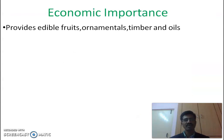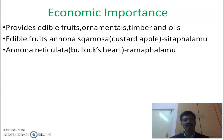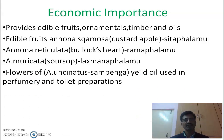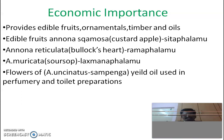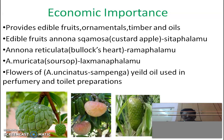The economic importance of the family: it provides edible fruits, ornamentals, timber, and oils. Annona squamosa is also called custard apple or Sitaphalam in Telugu. Annona reticulata is also called bullock's heart or Ramaphalam. Annona muricata is also called soursop or Laxmanaphalam. Flowers of Artabotrys odoratissimus, also called Sampangi, yield essential oil useful in perfume and toiletry preparation.